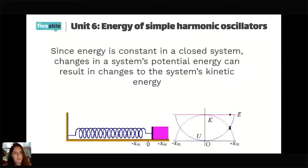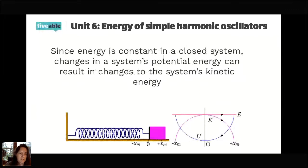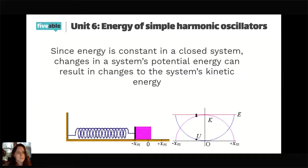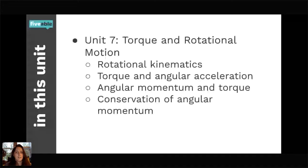Since energy is constant in a closed system, changes in potential energy result in changes to kinetic energy so that the total remains constant. That is the end of Unit 6, simple harmonic oscillators.